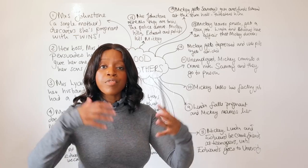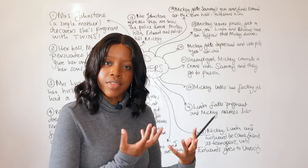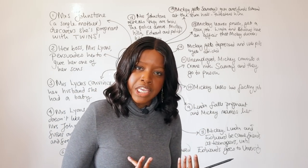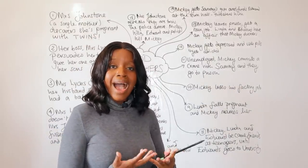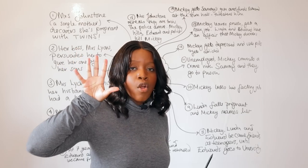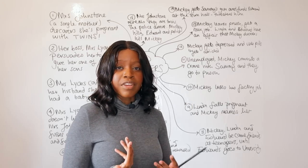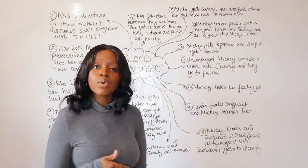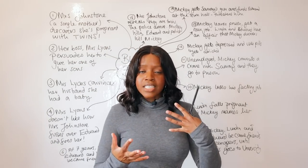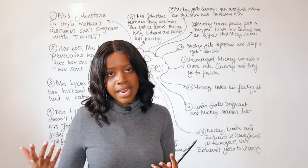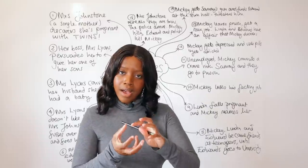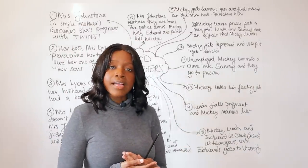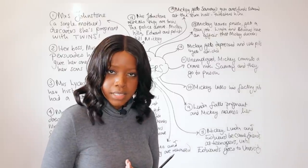Mickey, Linda, and Edward reunite as teenagers in this new environment. A massive divide is now evident: Edward attends private school while Mickey and Linda attend a lower-quality state school. Mickey doesn't achieve great grades, and we see a growing gap — Edward aims for and gets into university, while Mickey leaves without qualifications. Linda falls pregnant fairly early. It is also hinted that Edward may be in love with Linda, though he hides this from her.